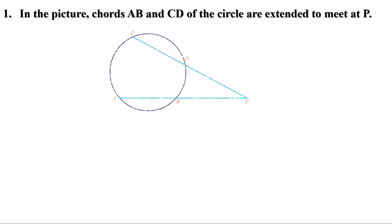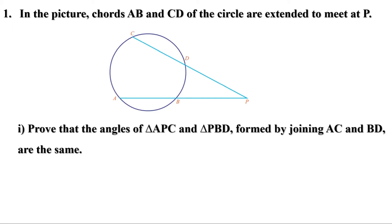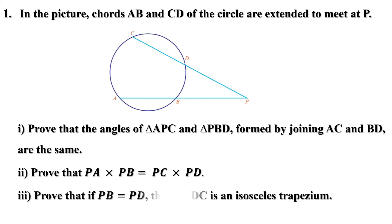There was a homework. Let us take the answer. In the picture, chords AB and CD of the circle are extended to meet at P. Prove that the angles of triangle APC and triangle PBD formed by joining AC and BD are the same. Prove that PA into PB equal to PC into PD. Prove that if PB equal to PD, then ABDC is an isosceles trapezium.